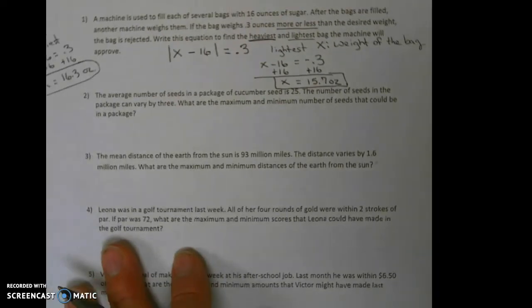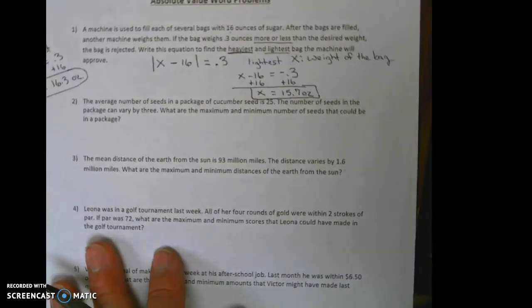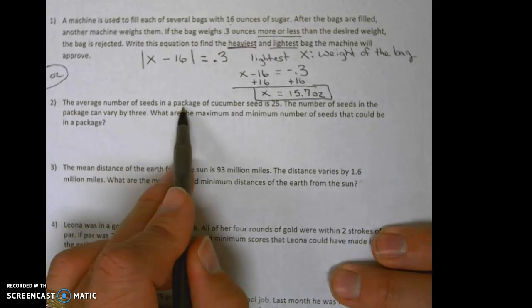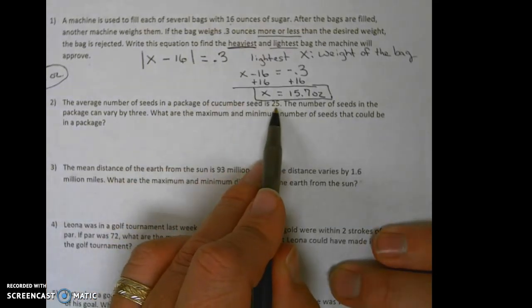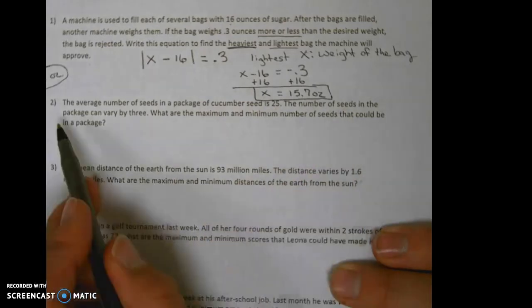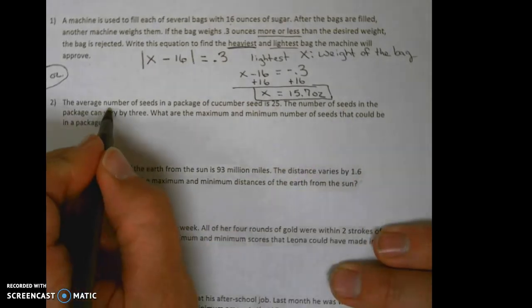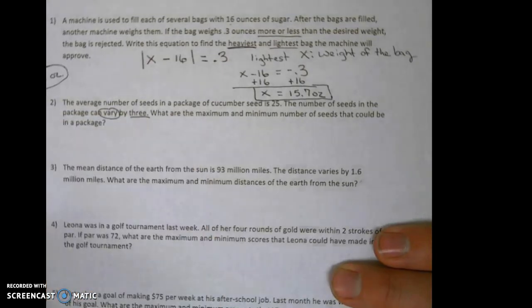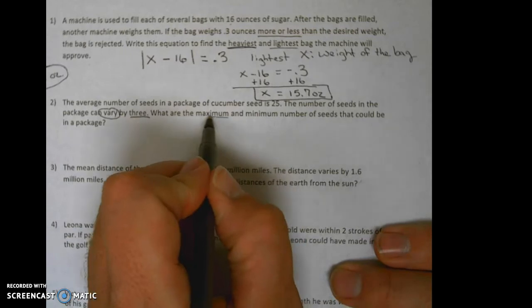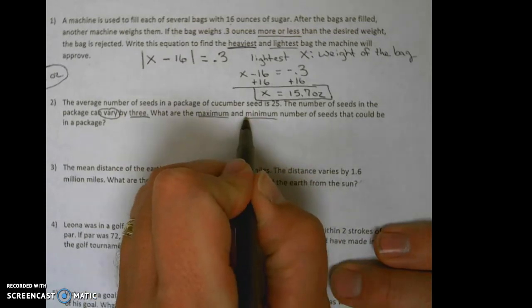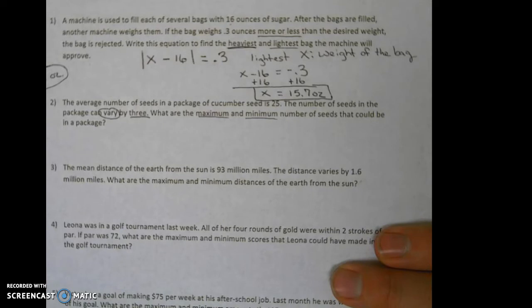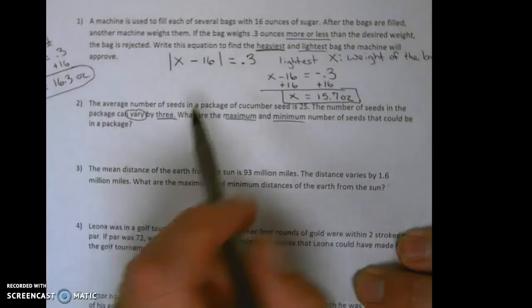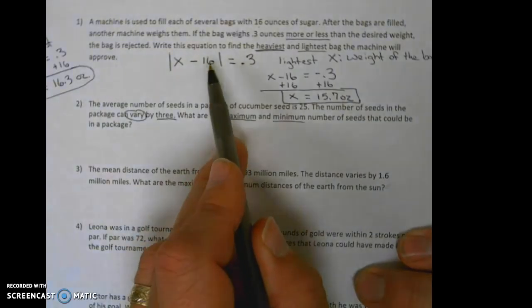Let's take a look at number two. The average number of seeds in a package of cucumber seed is 25. The number of seeds in the package can vary by three. What are the maximum and minimum number of seeds that could be in a package? Now you need to look for patterns. I have provided you an example on how to set this up.